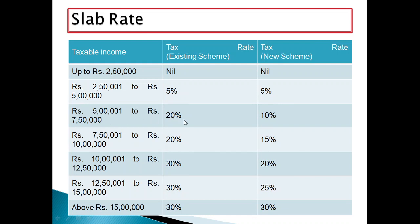If your income falls between ₹5 lakhs and ₹7.5 lakhs, you pay 20% under the existing scheme and 10% under the new scheme. Between ₹7.5 lakhs and ₹10 lakhs, it is 20% under the existing scheme and 15% under the new scheme. Between ₹10 lakhs and ₹12.5 lakhs, it is 30% under the existing scheme and 20% under the new scheme. Between ₹12.5 lakhs and ₹15 lakhs, it is 30% under the existing scheme and 25% under the new scheme.